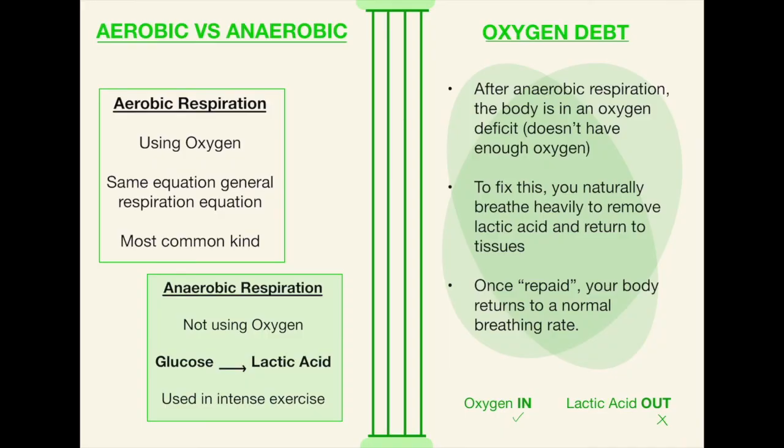Next we have aerobic versus anaerobic. Aerobic respiration just means it uses oxygen and it is the same equation that we see for general respiration and this is the most common kind. Anaerobic respiration just means it doesn't use oxygen. This purely takes your glucose because there's no oxygen input and converts it into lactic acid. So when we sprint or do some high intensity activity this is what happens.